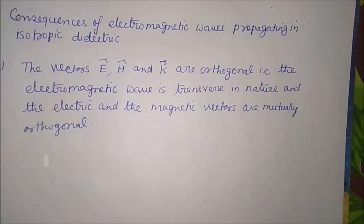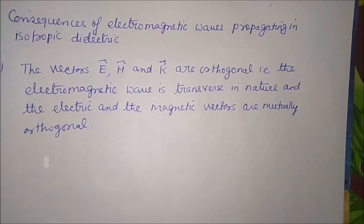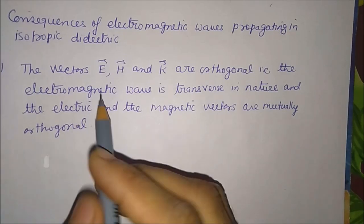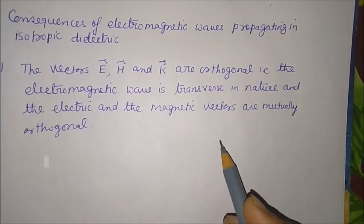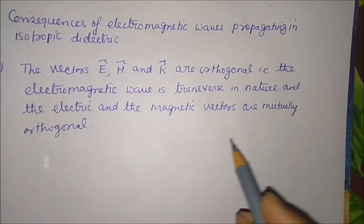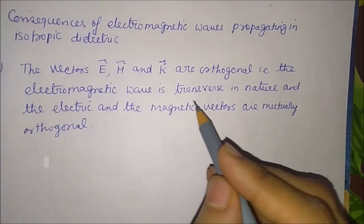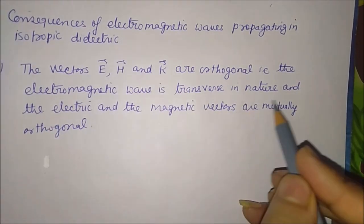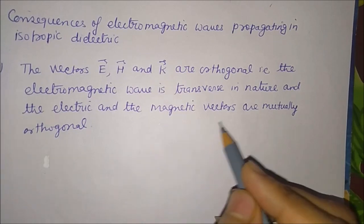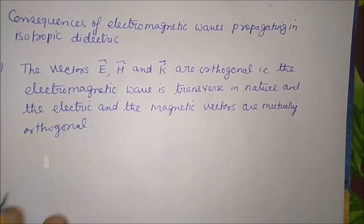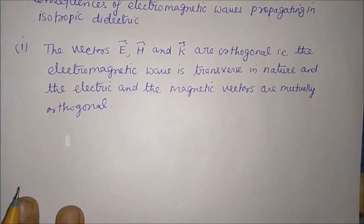Now let us see some consequences of propagation of electromagnetic waves in isotropic dielectric. The first consequence: the vectors E, H, and k are orthogonal. That is, the electromagnetic wave is transverse in nature and the electric and magnetic vectors are mutually perpendicular.